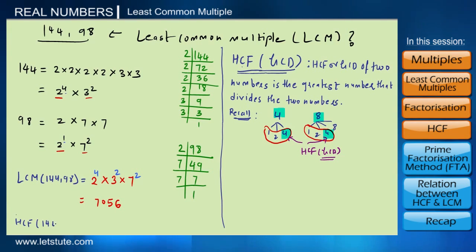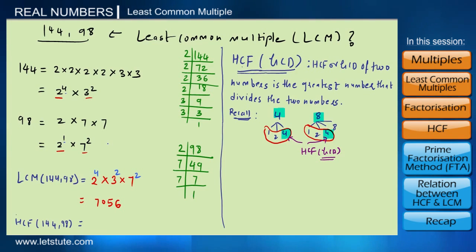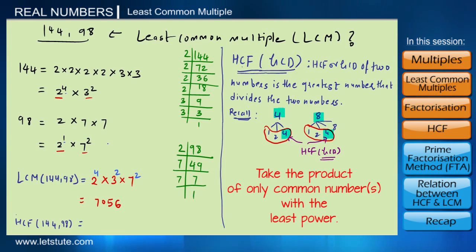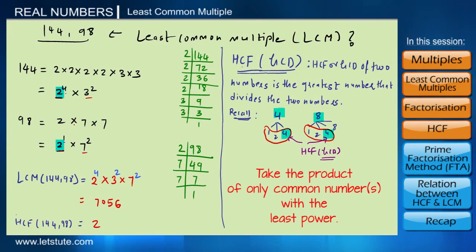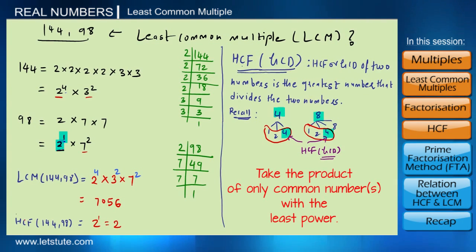To find the highest common factor of 144 and 98 by factorization: unlike LCM where we take the greatest power, for HCF we take the product of only the common factors with the least power. Here, 2 is the only common factor, and its least power is 1, so the HCF of 144 and 98 is equal to 2.